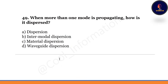When more than one mode is propagating, how is it dispersed? Option A: dispersion. Option B: intermodal dispersion. Option C: material dispersion. Option D: waveguide dispersion. Correct option is B — intermodal dispersion.